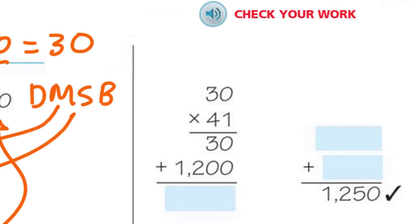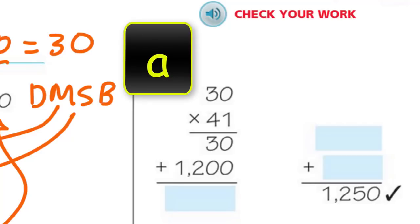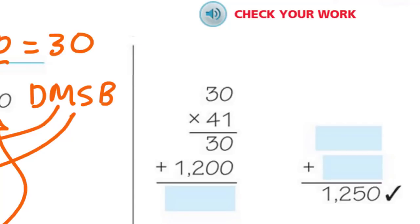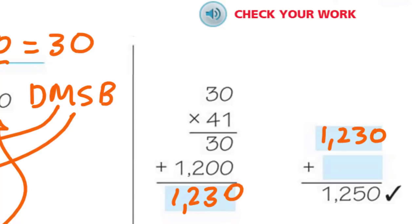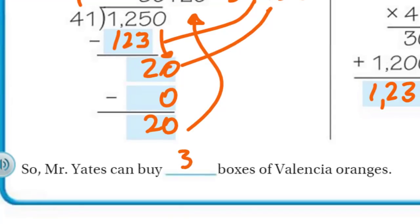We have 30, remainder 20. Let's check our work: take our 30, multiply it by the divisor. 0 times 1 is 0, 1 times 3 is 3 — looks good. Put in my placeholder, then 4 times 0 is 0, 4 times 3 is 12. Now I just need to do the adding: 1,230 is not our dividend, so we add on our remainder of 20, giving us 1,250. Mr. Yates can buy 30 boxes of Valencia oranges. The remainder 20 means he's not going to be able to buy another whole box — he could get about two-thirds of a box, but he couldn't get a full box with the $1,250 he had set aside.